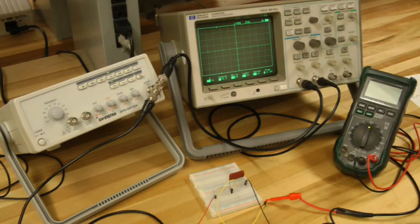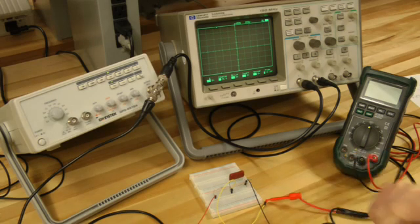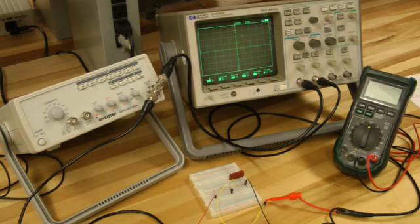On the breadboard I have a resistor and a capacitor. The resistance value as measured by the multimeter is 15.92 kilo ohms. The capacitance value as measured by the multimeter is .0098 microfarads, approximately .01 microfarads.